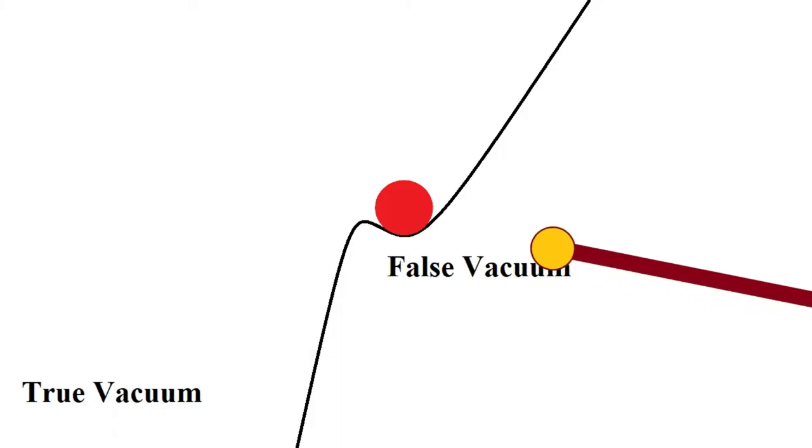Luckily, the energy required to tip a false vacuum off the cliff is immense. So, we are probably okay, right?